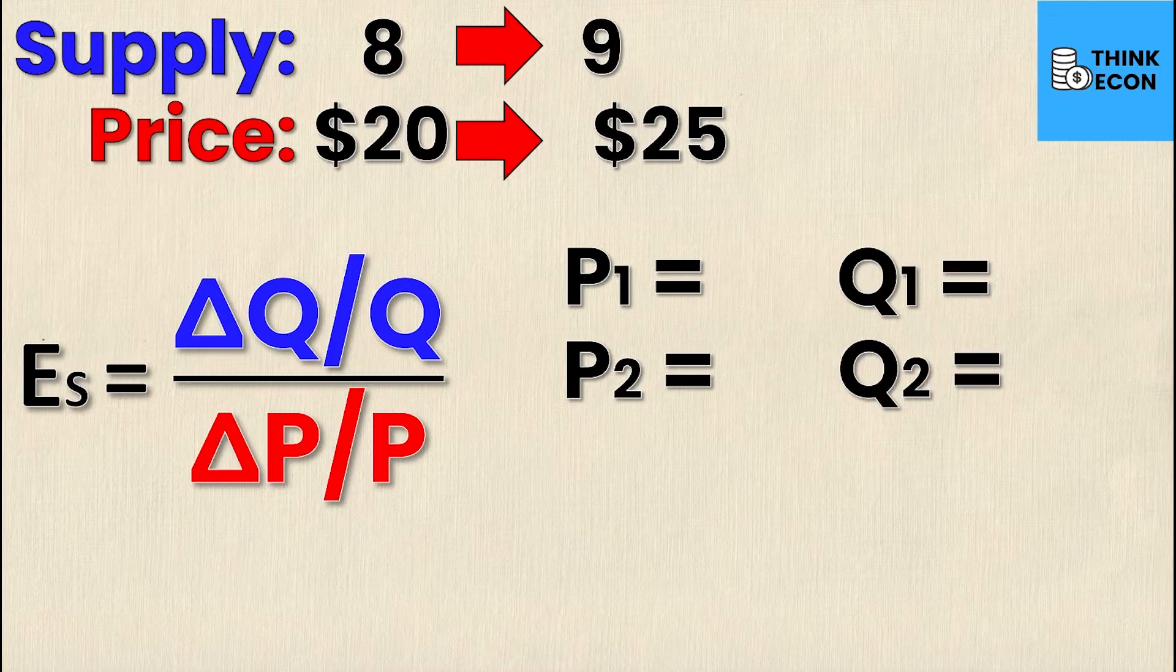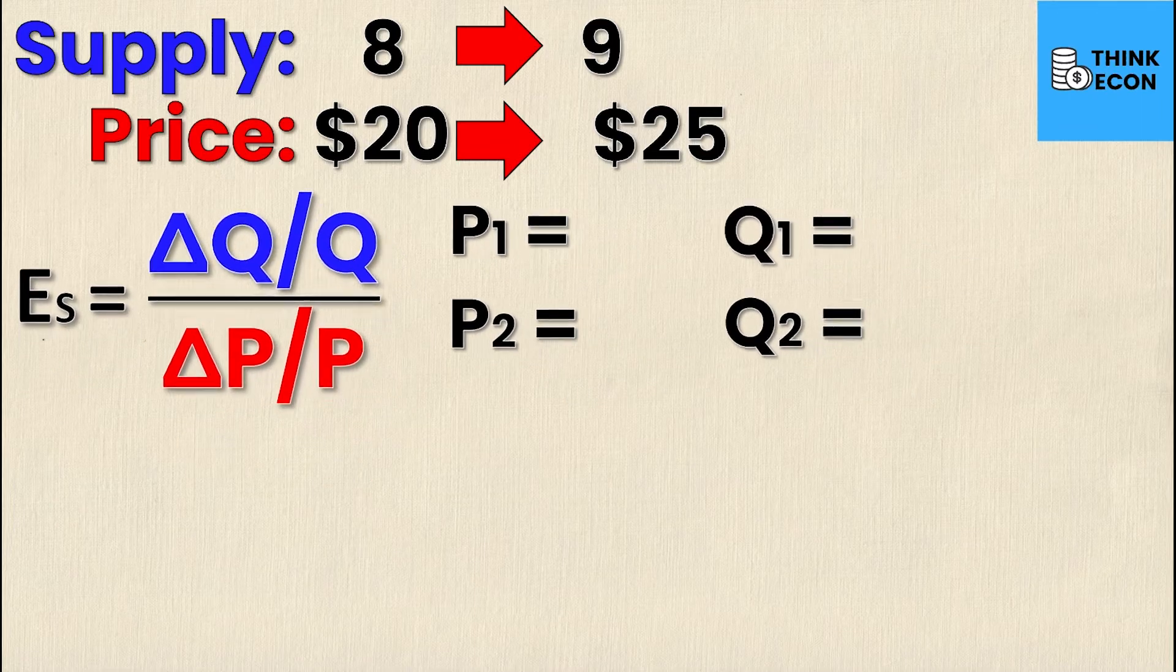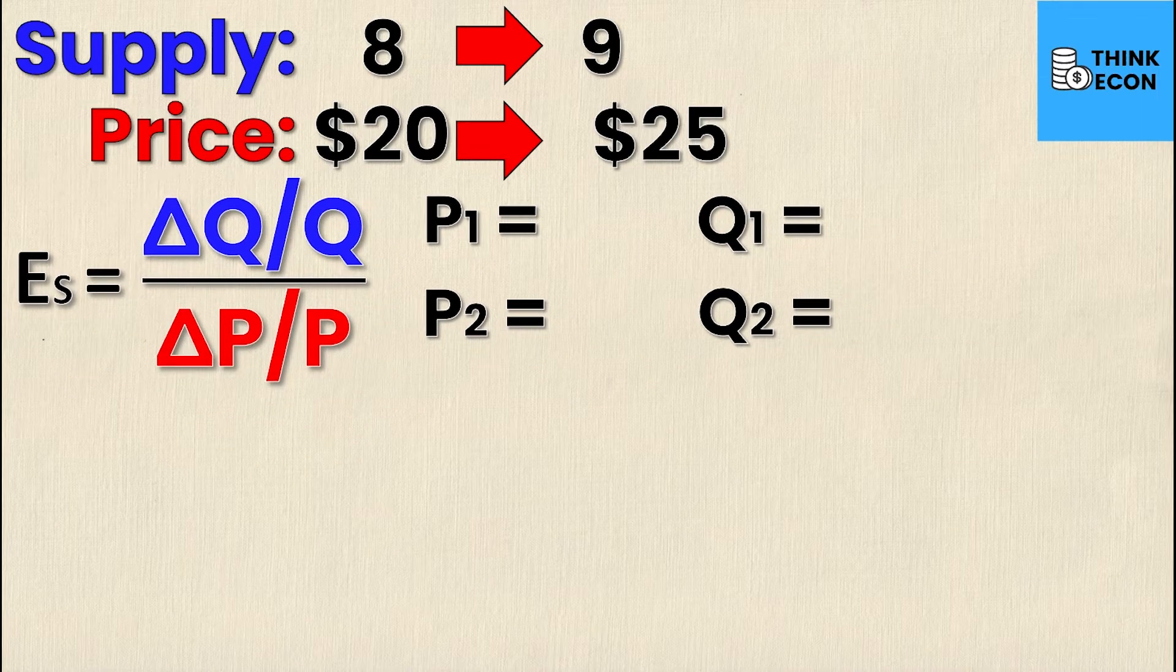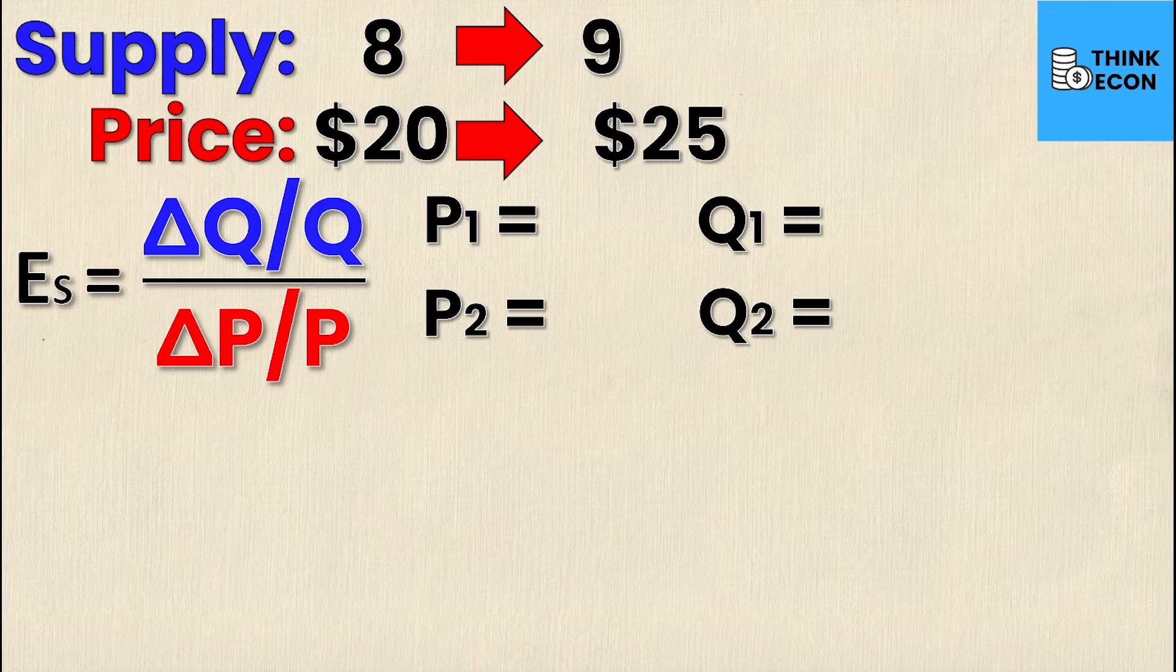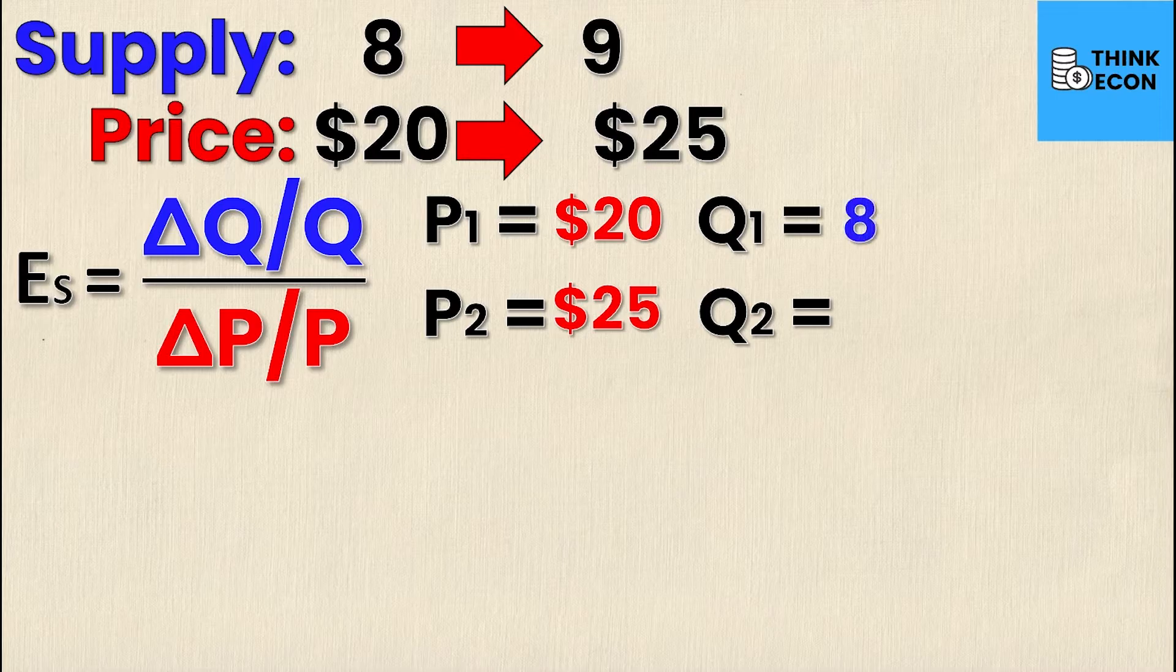Luckily for me, in this particular example I've been given all four values, so all I need to do is plug them into the formula. The old price or the initial price is $20, the new price is $25, the old quantity supplied is 8, and the new quantity supplied is 9.